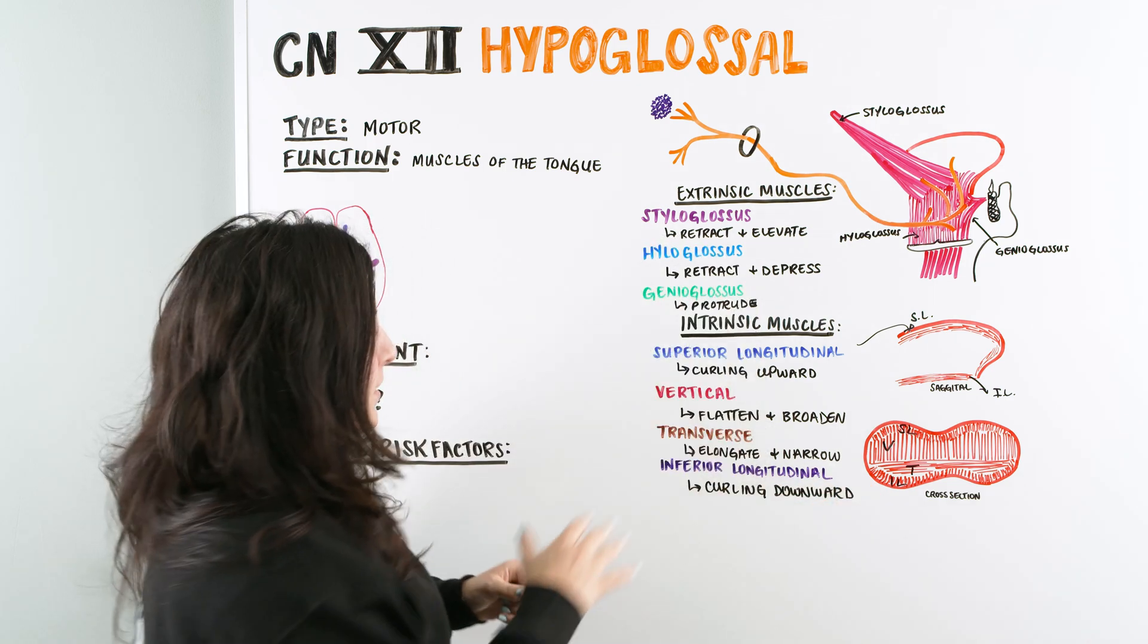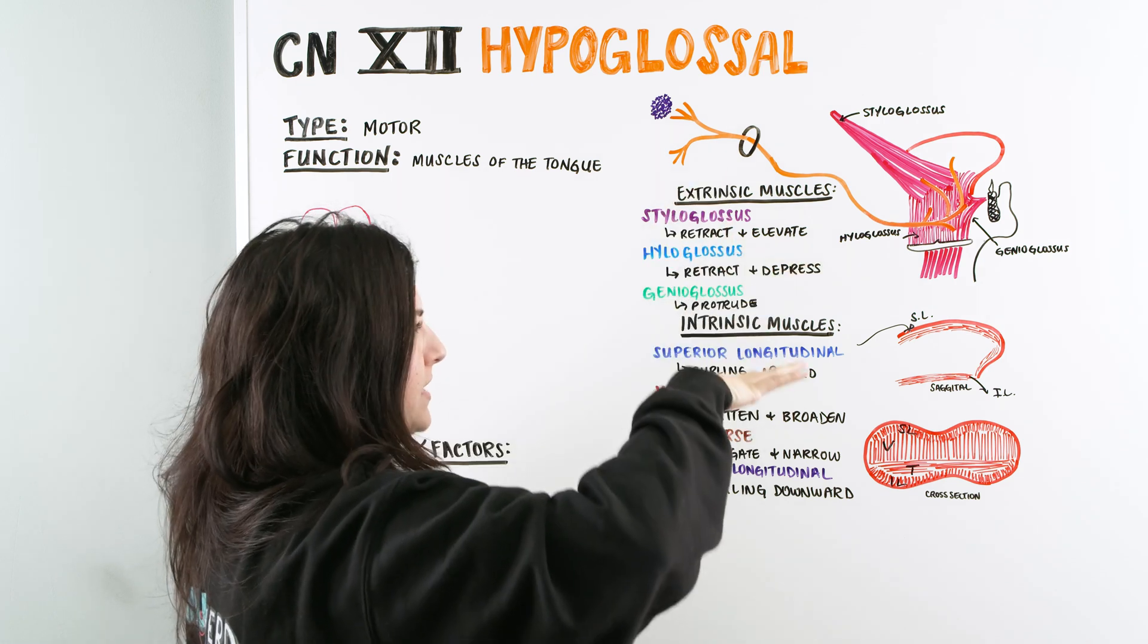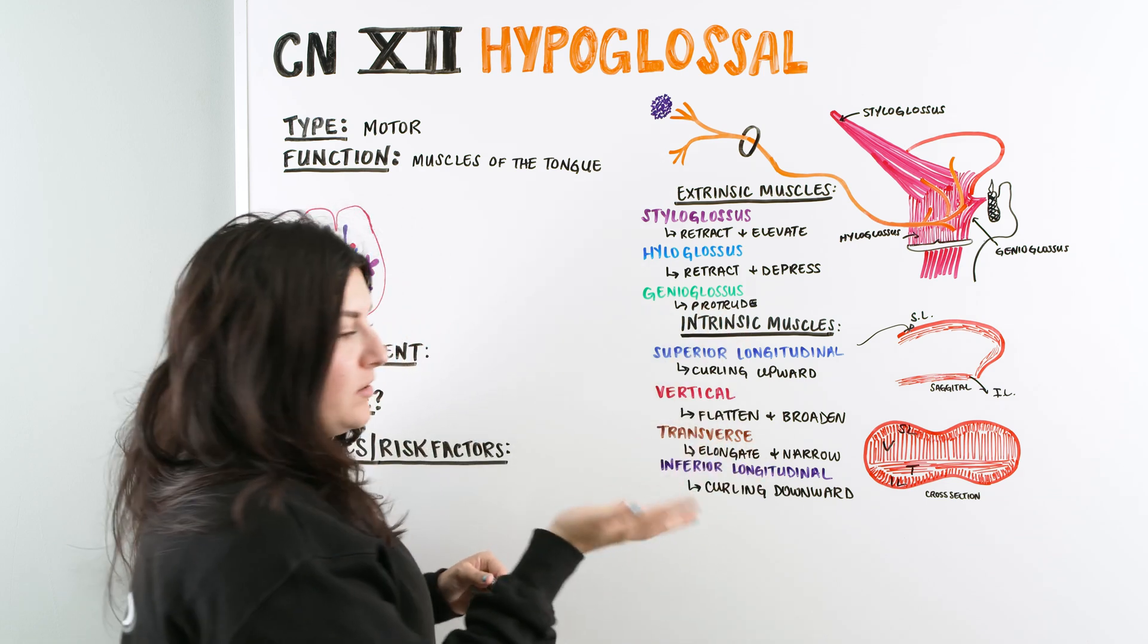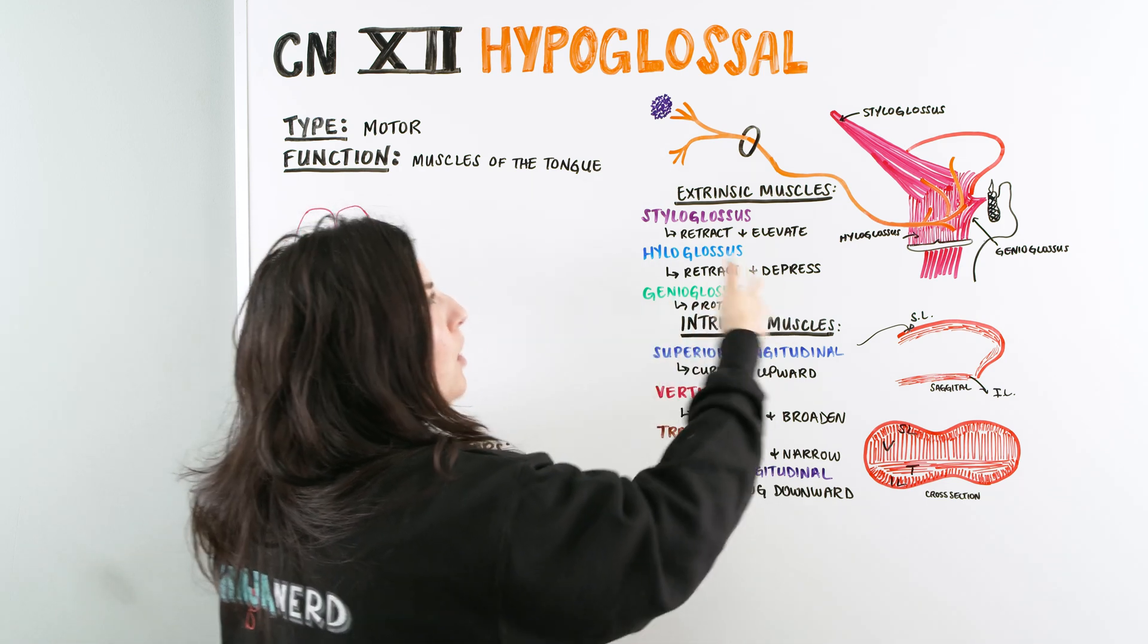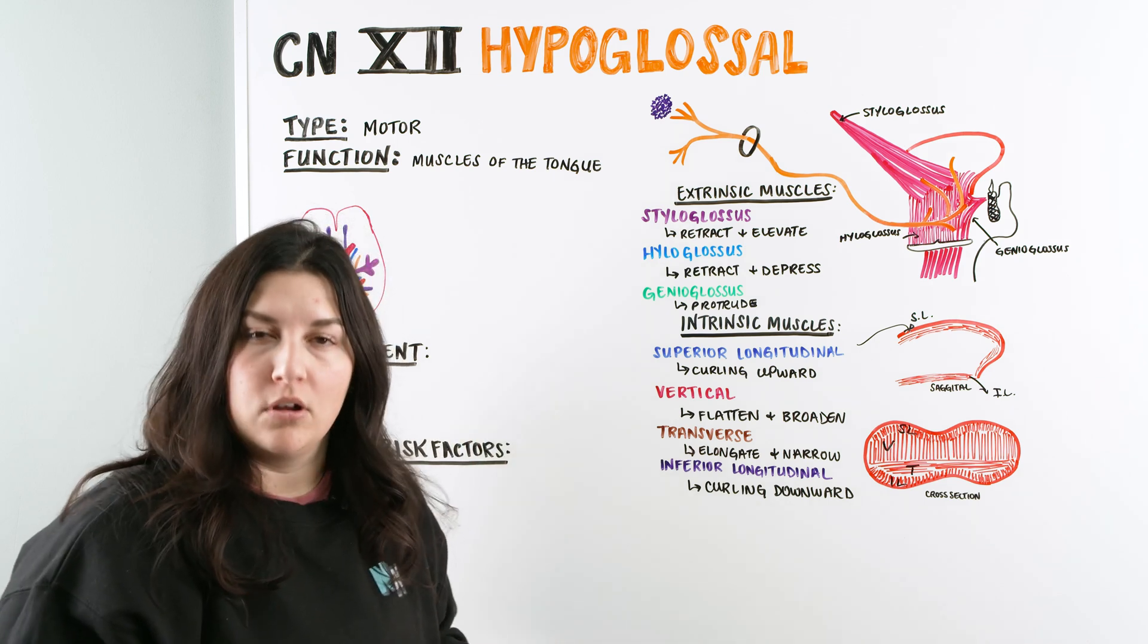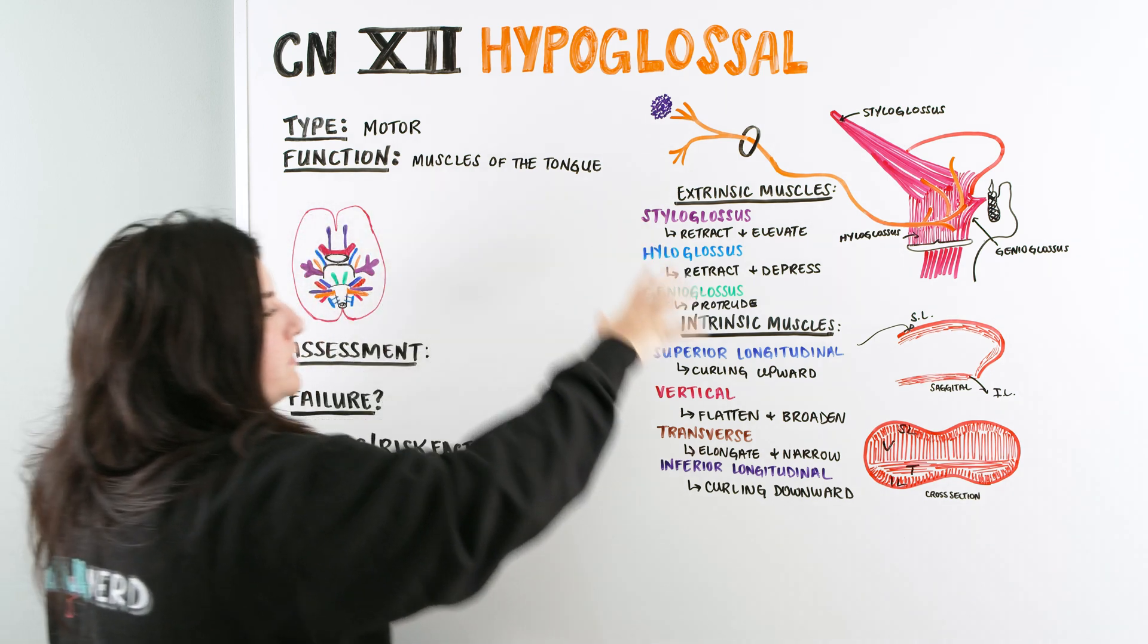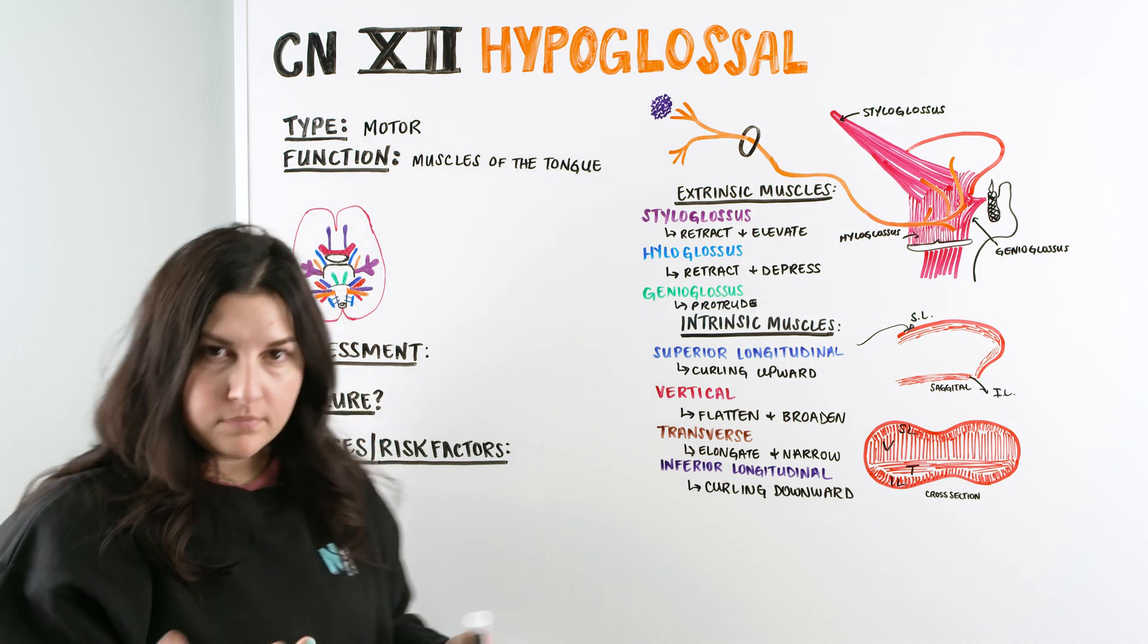So if we look at all this, right, we look at the extrinsic muscles that are allowing the tongue to move up and down, move in and out. And then we have the intrinsic muscles that are allowing to change the shape of the tongue. We can then start thinking about how do we assess a patient's hypoglossal nerve, right? How do we know that the function of the tongue, all of these different things are intact based upon our assessment?